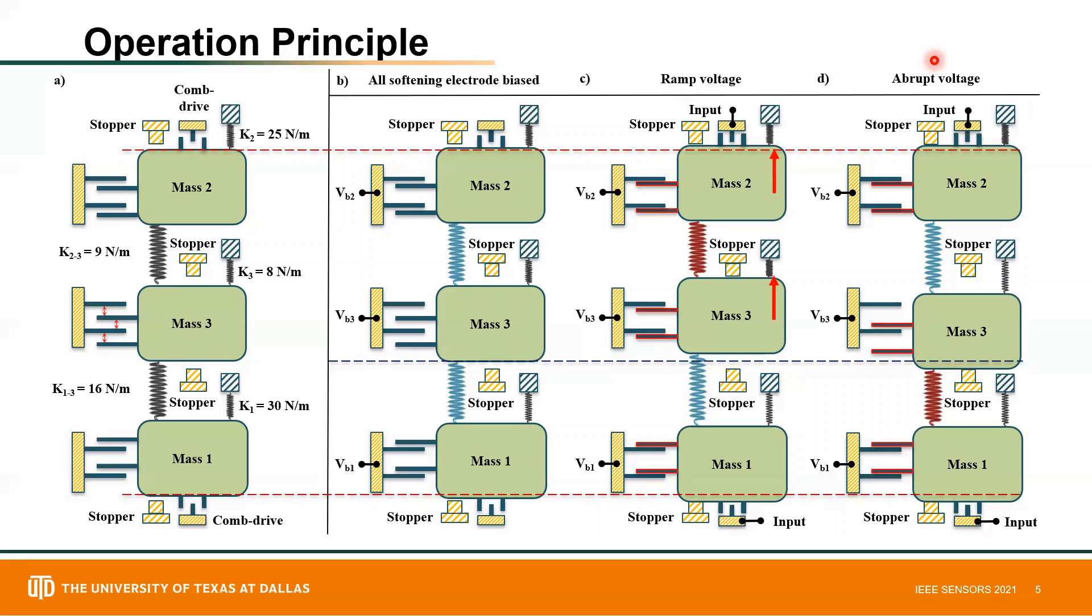In this situation, the stronger coupling between mass three and mass one will cause mass three to move downward until its stopper hit detection, which indicates a detection of abrupt increase in the voltage.